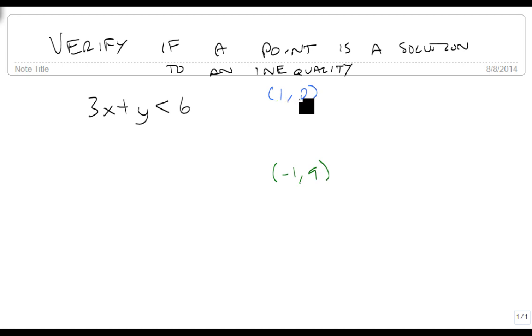If we have a point, remember this is an x-y pairing, so we're just going to plug in 3 times 1 plus 0 and see if that's less than 6. That's 3 plus 0 is less than 6. 3 is less than 6, so this is true.